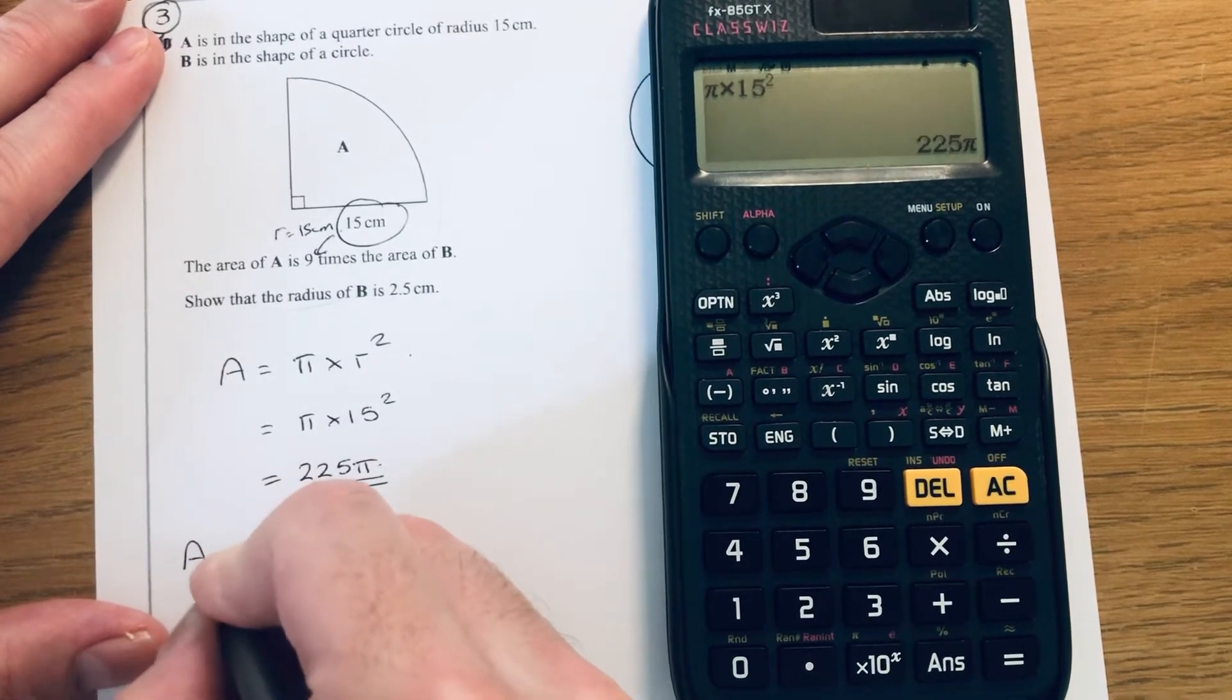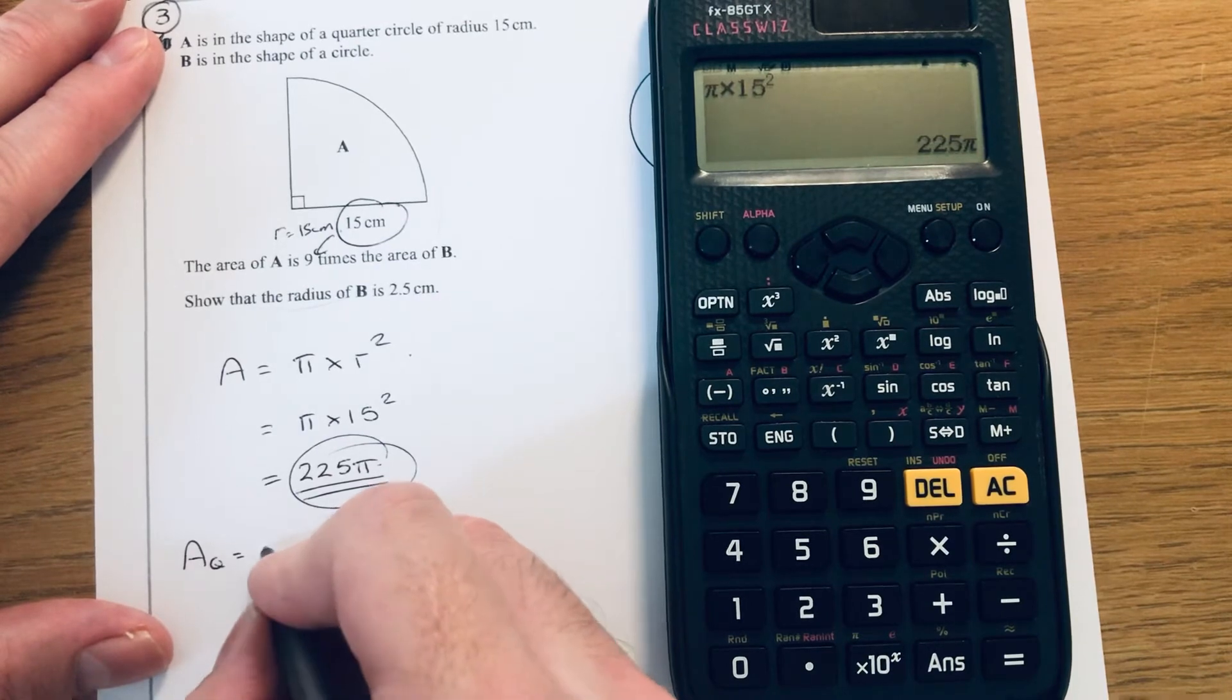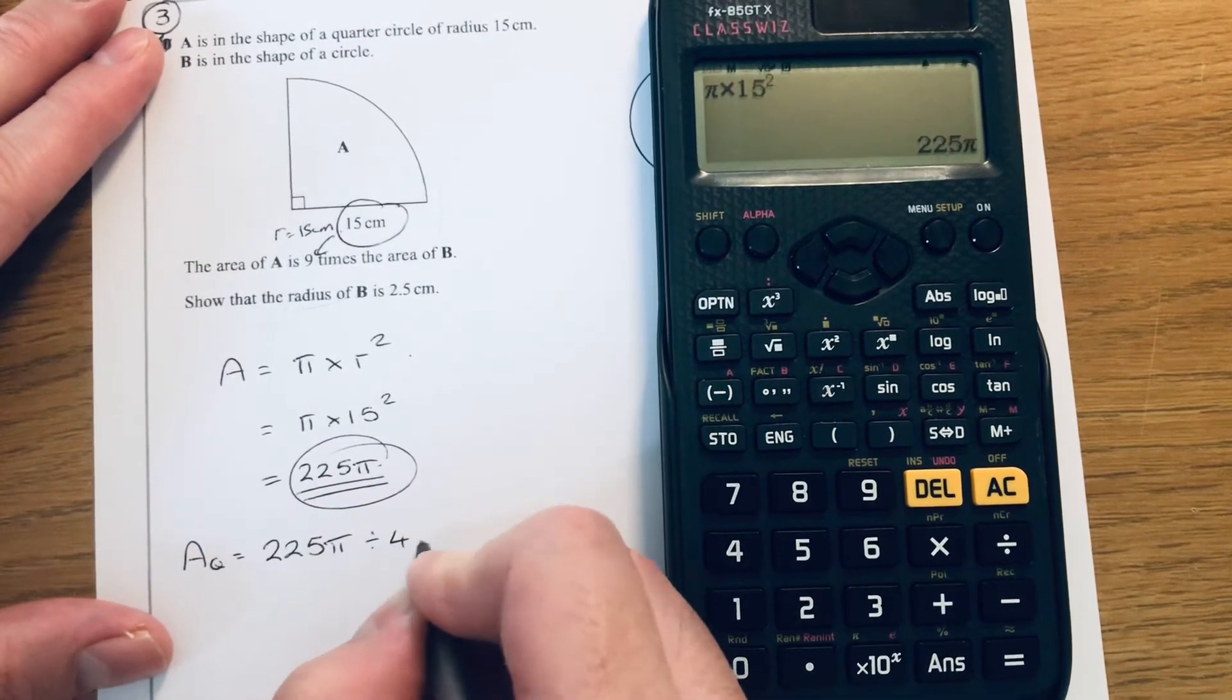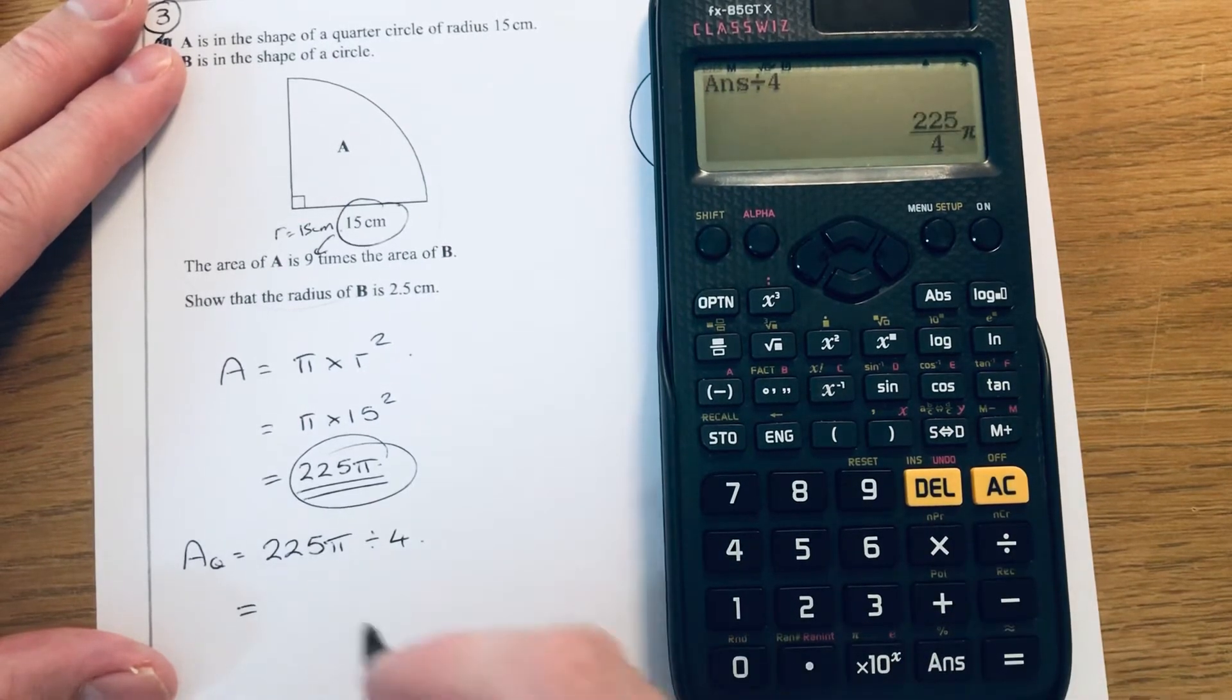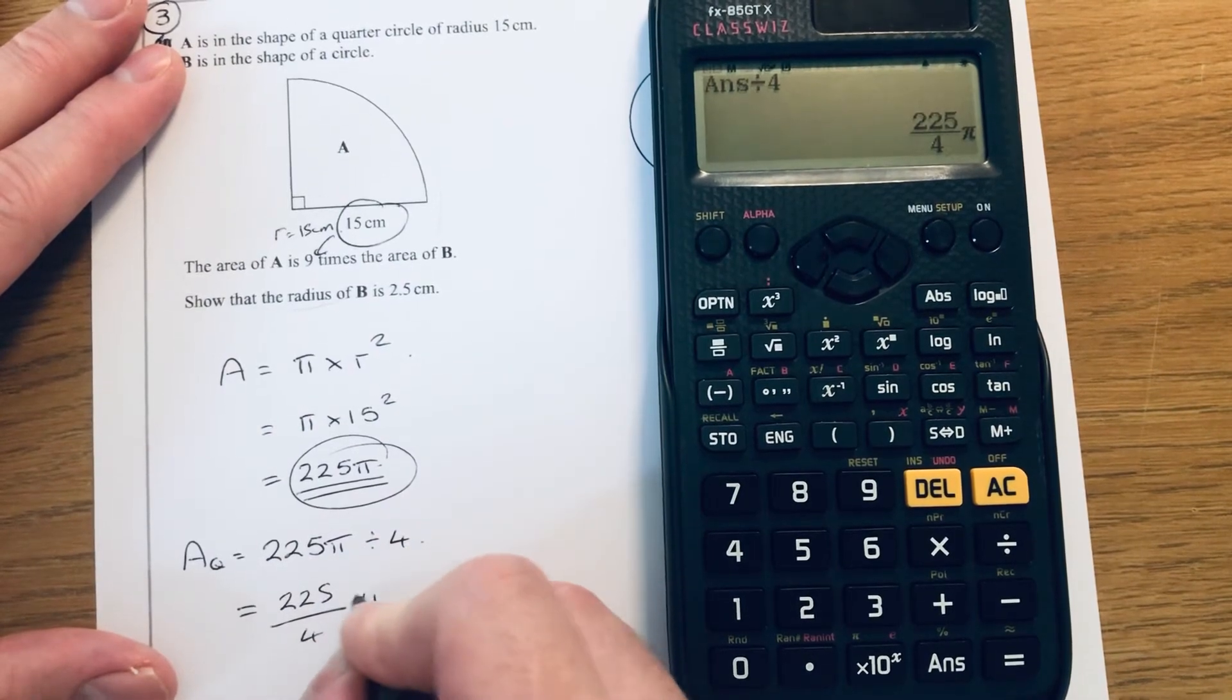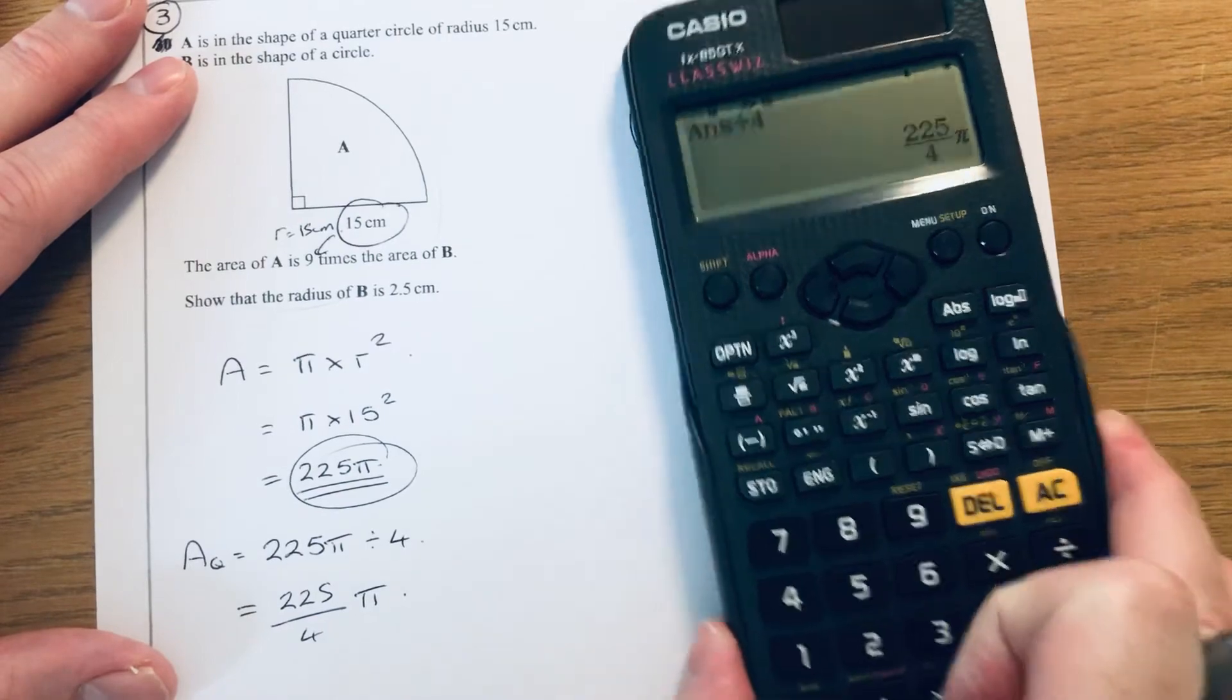To work out the area of the quarter circle, we need to divide that answer by 4. I've left it as an exact answer because it's just easier to do rather than having nasty decimals. So if you divide that by 4, that will give us 225 over 4 pi. So that is the area of our quarter circle.